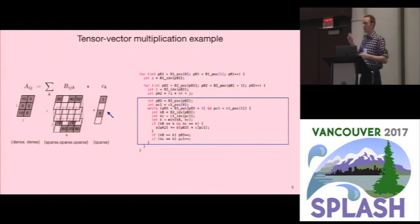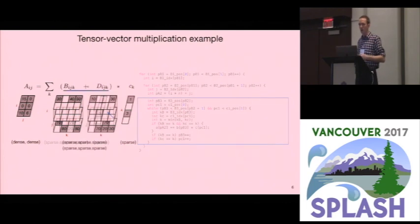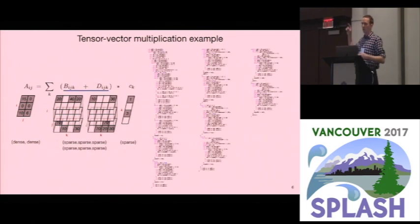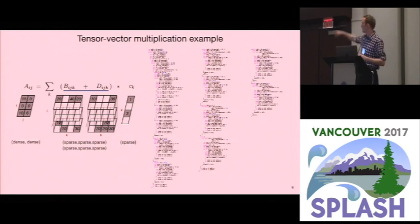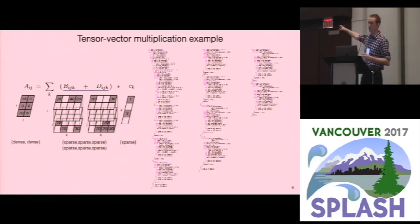But if I want to make the vector C sparse as well, now I have to insert code that iterates over the intersection of the sparse tensor and the sparse vector — it's an intersection because multiplying by zero gives you zero. And if I want to add the tensor to another tensor before multiplying by a vector, I have to write all this code. I'm not expecting you to read this code, and I'm not expecting you to write this code.